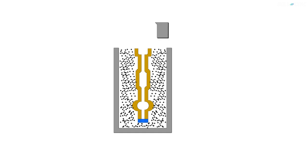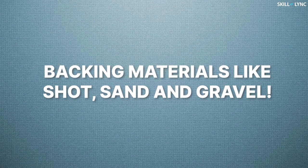The shell mold is then housed inside a flask in which further process takes place. It must be noted that the cores are placed inside the mold before the assembly. Also, the shell mold is supported or reinforced inside the flask with the help of backing materials such as shot, sand, and gravel.